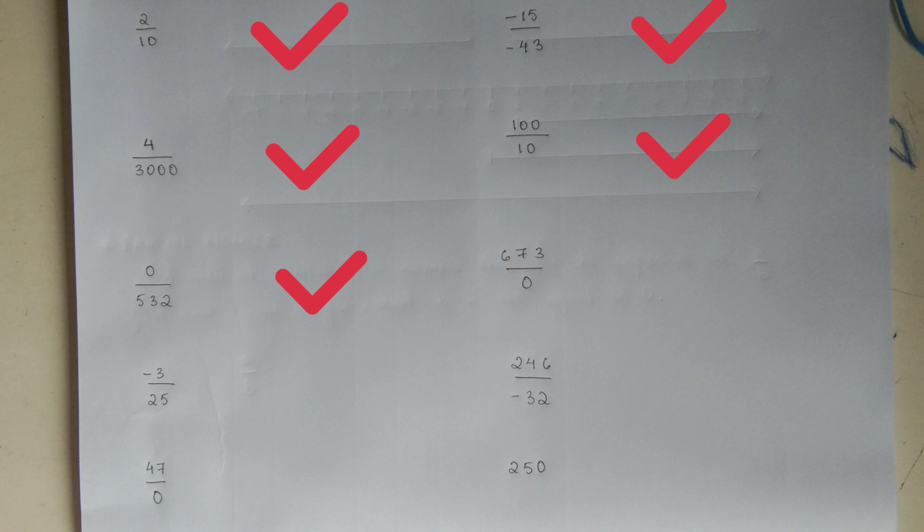How about 0 by 532? Is 0 an integer? Yes. Is 532 an integer? Yes. Is it 0? No. So, it's a rational number. Now, let's see. 6, 7, 3 by 0. 6, 7, 3 is an integer in M? Yes. 0 is an integer in M? Yes. So, if you have a rational number, it's a rational number. Next, minus 3 by 25. Both of them are integers. So, it's a rational number. 2, 4, 6 by minus 32. Now, 47 by 0 is the integer of M. Yes, the integer of M is equal to 0.